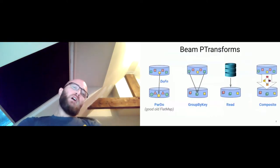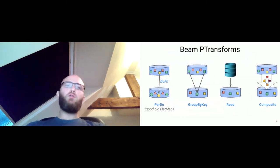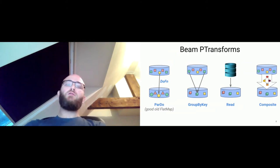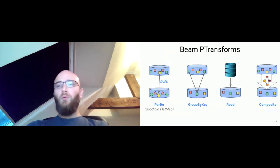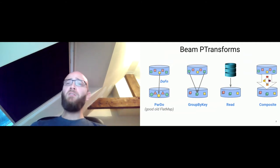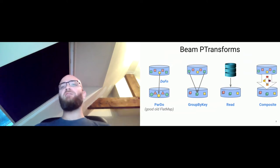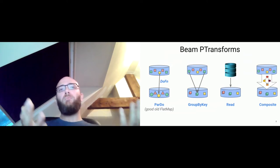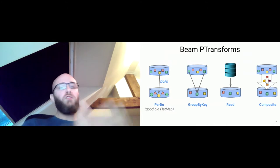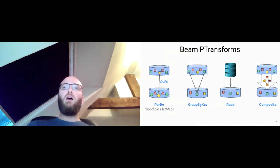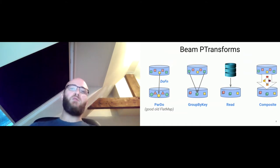There are only three Beam primitives: the ParDo, which is an element-wise processing (the good old flat map); the GroupByKey, which groups elements into groups that can be processed in parallel downstream; and the Read, which ingests data into the pipeline. All other transforms in the Beam SDKs are composites of ParDo and GroupByKey. Even the reducer equivalent, called Combine in Beam, is implemented as a ParDo and a GroupByKey.